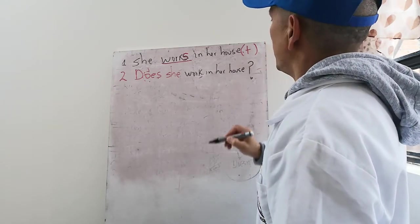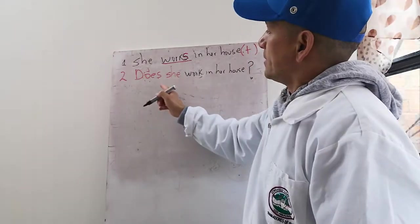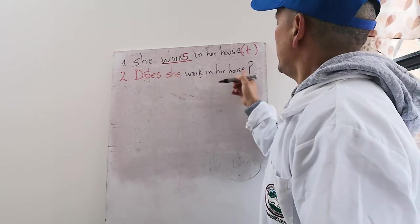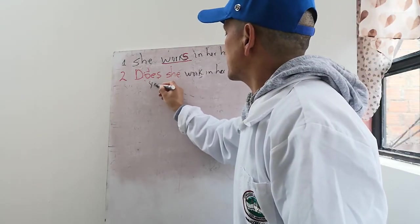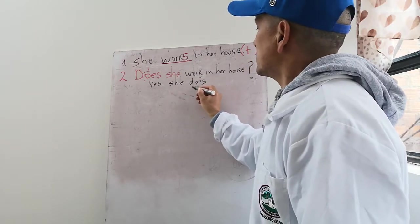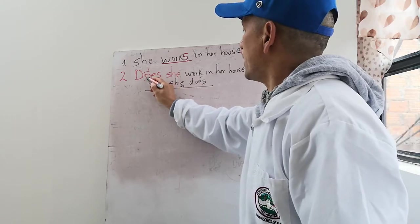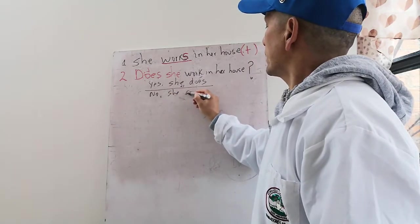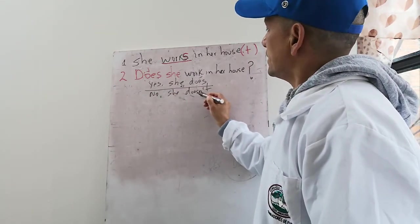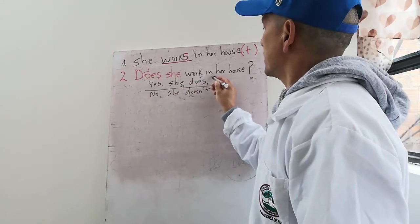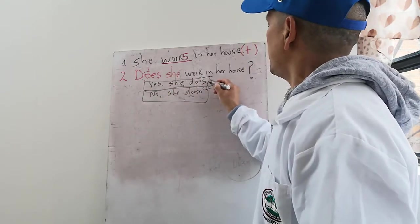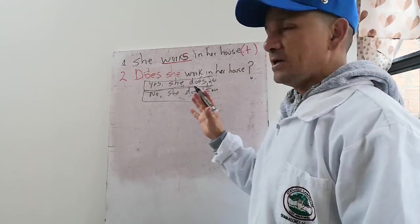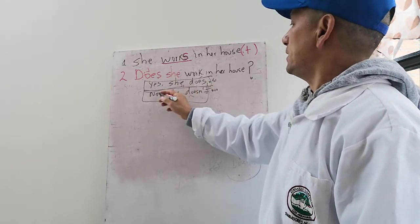Algo muy importante que en el examen le puede salir es que si yo pregunto con DAS debo responder con DAS. Por ejemplo, does she work in her house? Yes she does. Y eso quiere decir un sí. Pregunto con DAS, respondo con DAS, o no she doesn't. Pregunto con DAS y respondo con DOESN'T. Recuerde que esto es un sí señor y este es un no señor muy educado. Como expresión, tres palabras para decir sí, tres palabras para decir no.